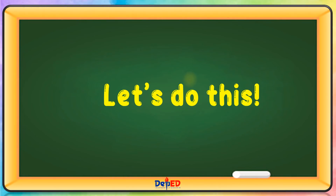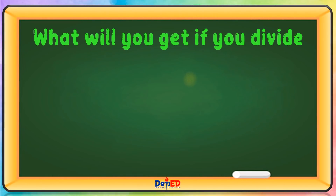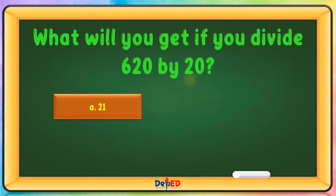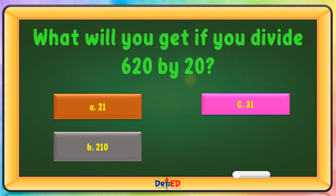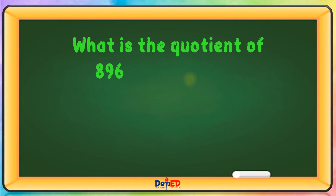Let's do this. Choose the letter of the best answer. What will you get if you divide 620 by 20? A. 21, B. 210, C. 31, D. 310. The correct answer is C.